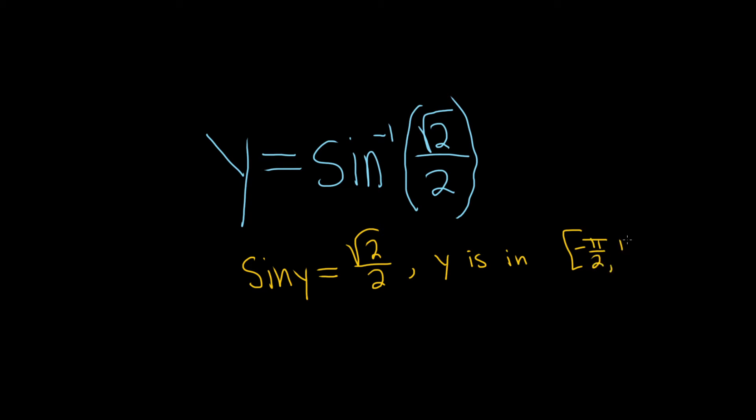So negative pi over 2 to pi over 2. This is probably the most important part of this problem—memorizing the range for each inverse trig function. For inverse sine or arcsine, it's this one.